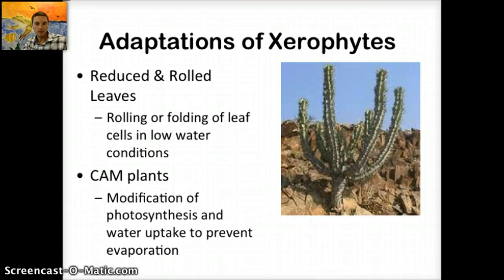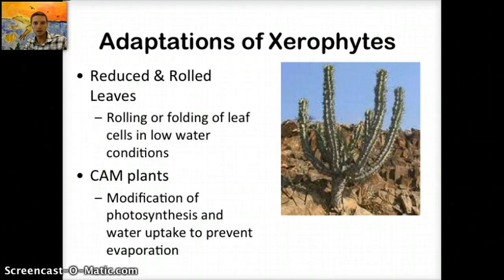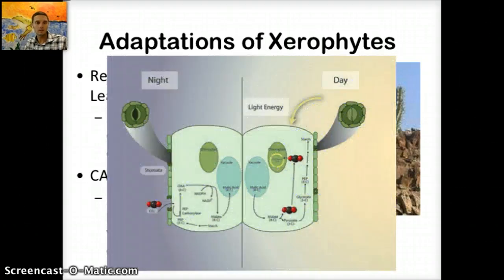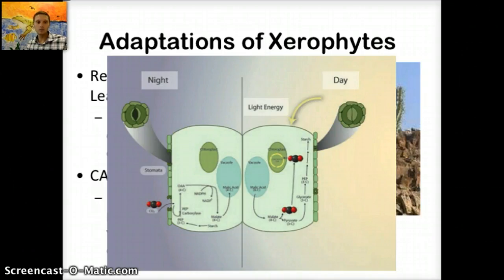A final example is CAM plants. In CAM plants, the stomata open during the night instead of the day to avoid significant water loss due to the heat of the day. During the night the stomata open up and CO2 is taken in. During the day the stomata close and the plant uses just the light energy. So during the day these plants perform the light-dependent reactions, and at night they perform the light-independent reactions when CO2 is needed to make sugar — a separation of those different steps.